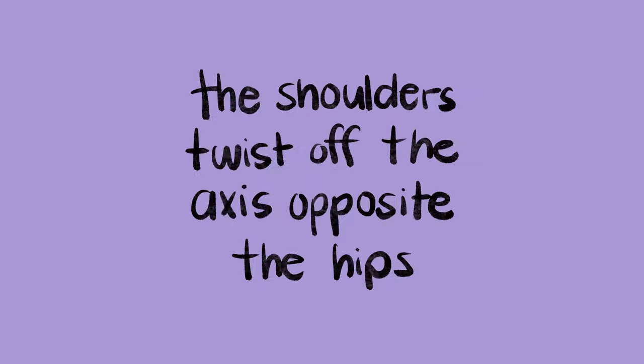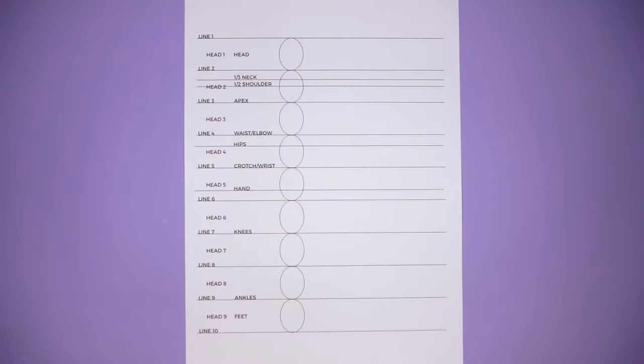So take note of that: the shoulders twist off the axis opposite from the hips. So let's get straight into it. Right here as you can see, I have a paper with horizontal lines drawn out to help me draw the fashion figure in the most ideal fashion proportions.